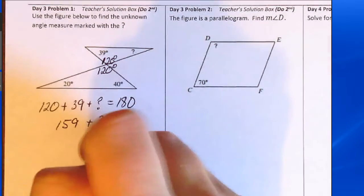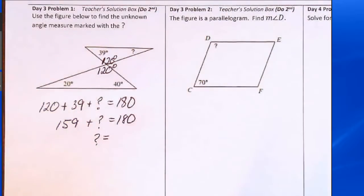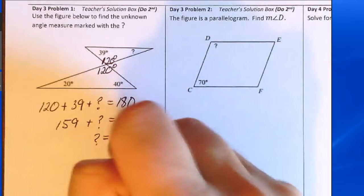Subtract 159 from both sides. This is going to be 21 degrees.